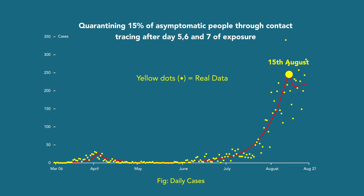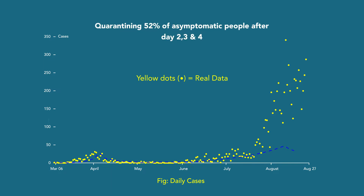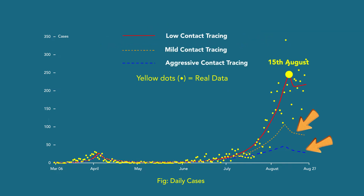This quarantine scenario applies uniformly after day 5, 6, and 7 of exposure. For the dotted dashed line, we assume that we are quarantining 52% of asymptomatic people after day 2, 3, and 4. Basically, the dashed lines here are two alternate scenarios with earlier detection of exposed individuals and in larger quantity.